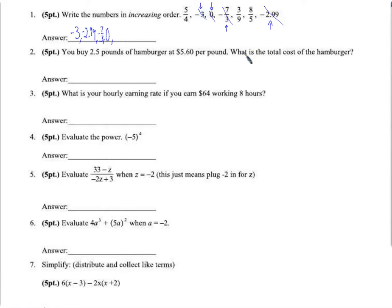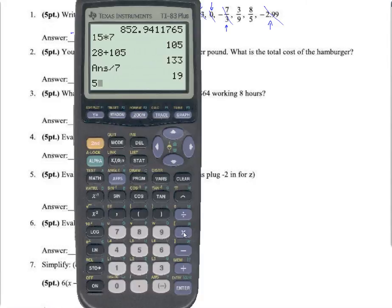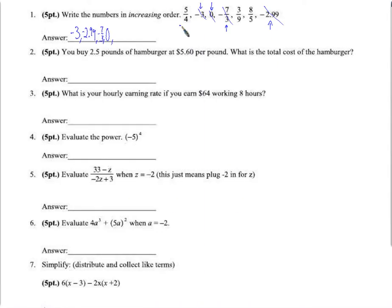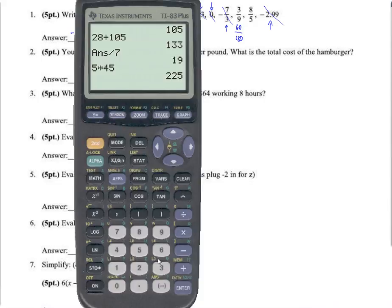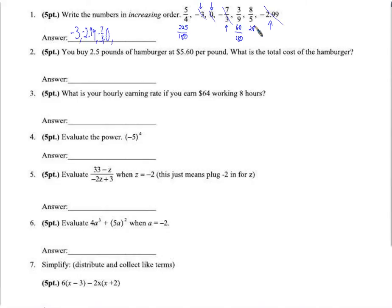These don't share any factors, so we need 2 factors of 2, 2 factors of 3, and a factor of 5 — essentially 20 times 9, which is 180. So 5 fourths becomes 5 times 45 = 225 over 180. Then 3 ninths: 9 times 20 gives us 3 times 20 = 60 over 180. And 8 fifths: 9 times 4 = 36, so 36 times 8 = 288 over 180.